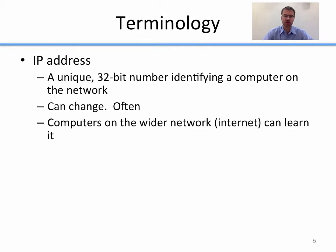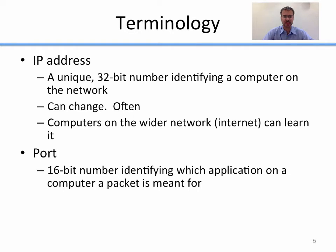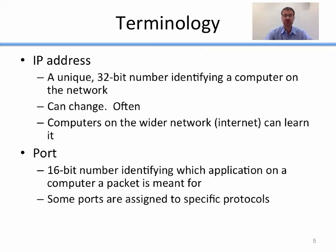An IP address can be learned by computers on the wider network or the internet whenever you're sending packets, because your IP address is put into packets so that replies can come back to you. Another piece of terminology is a port — a 16-bit number identifying which application on a computer a packet is meant for. So if I'm sending a packet to one of Google's servers, they need to know which application that packet is meant for, so I specify the IP address of the server and the port of the application. Port 80 is HTTP, 443 is HTTPS, 22 is used for SSH, et cetera.